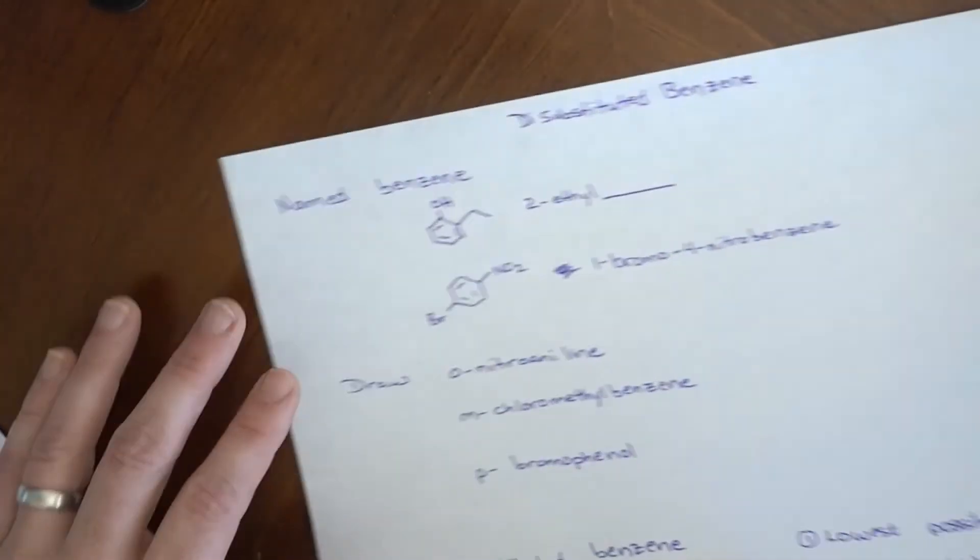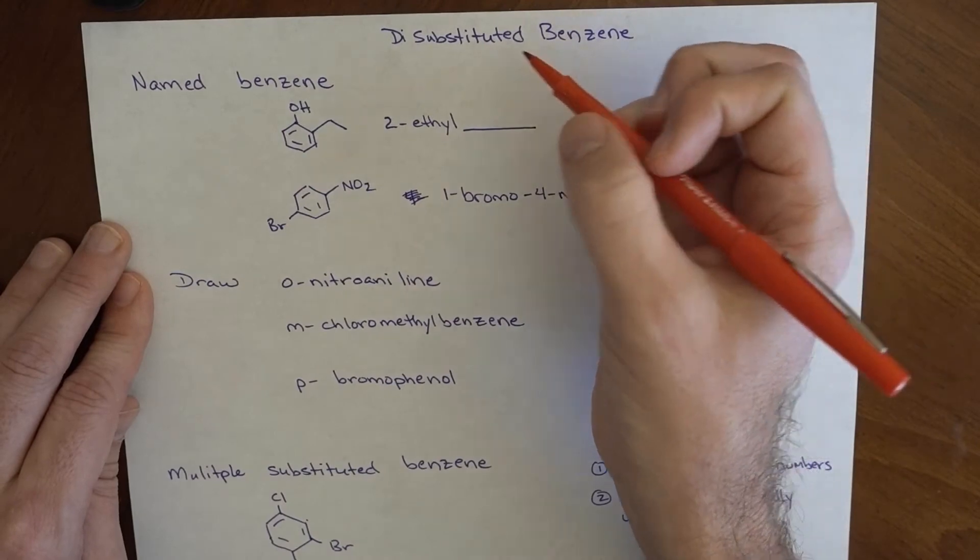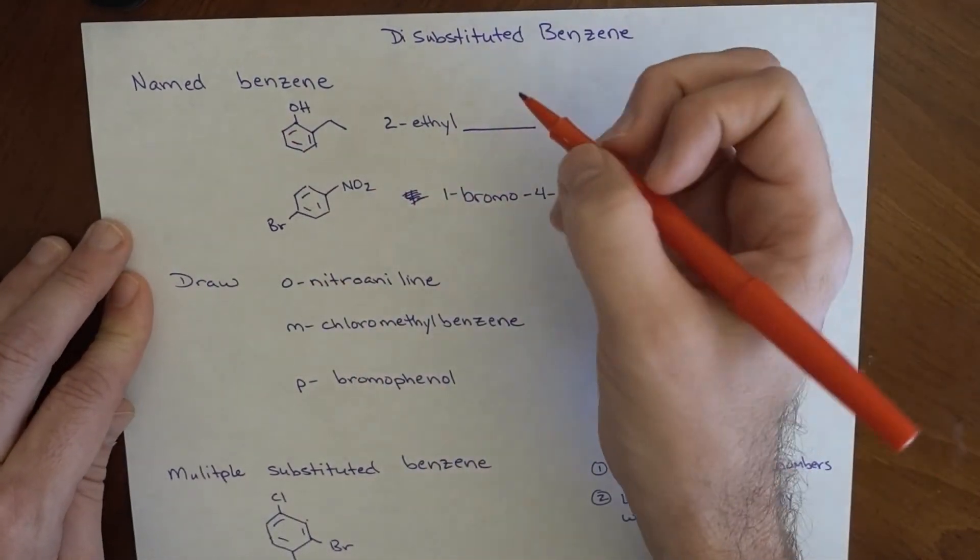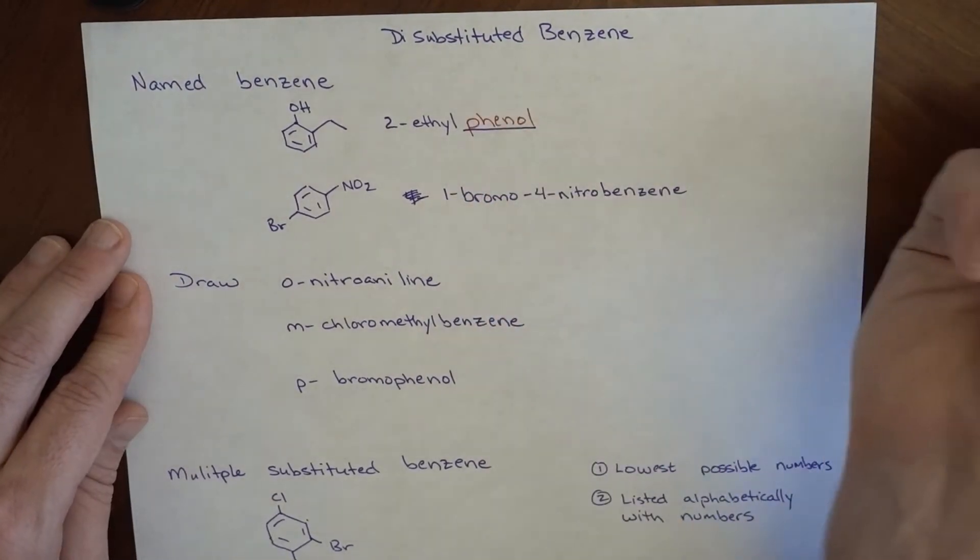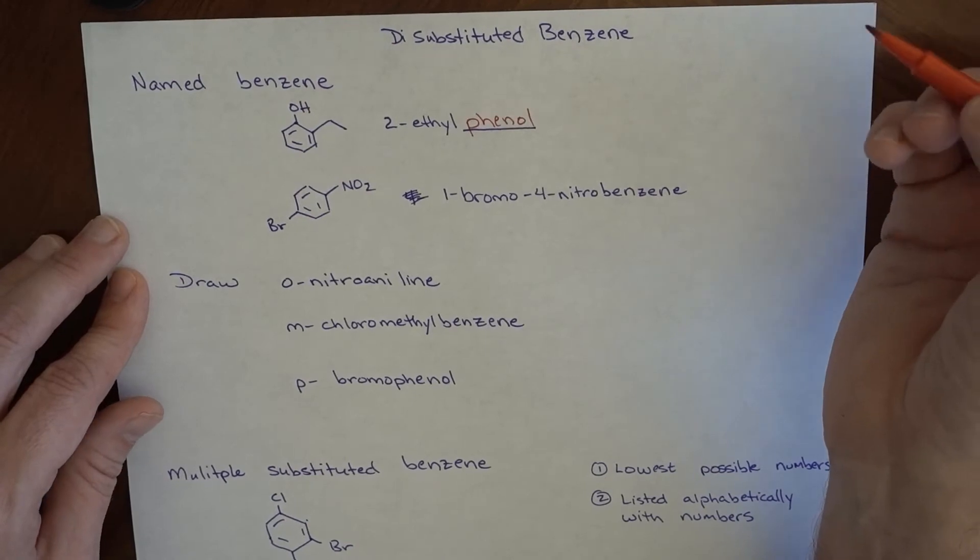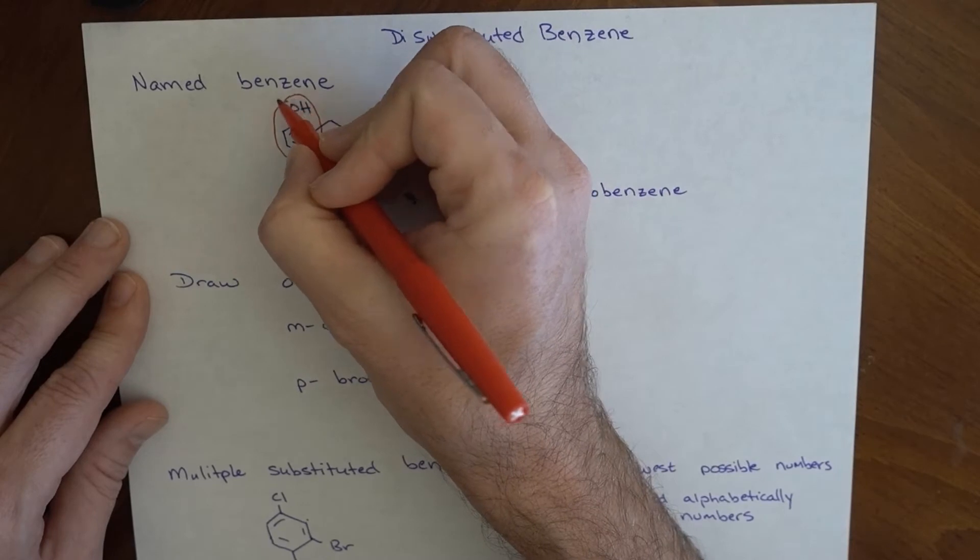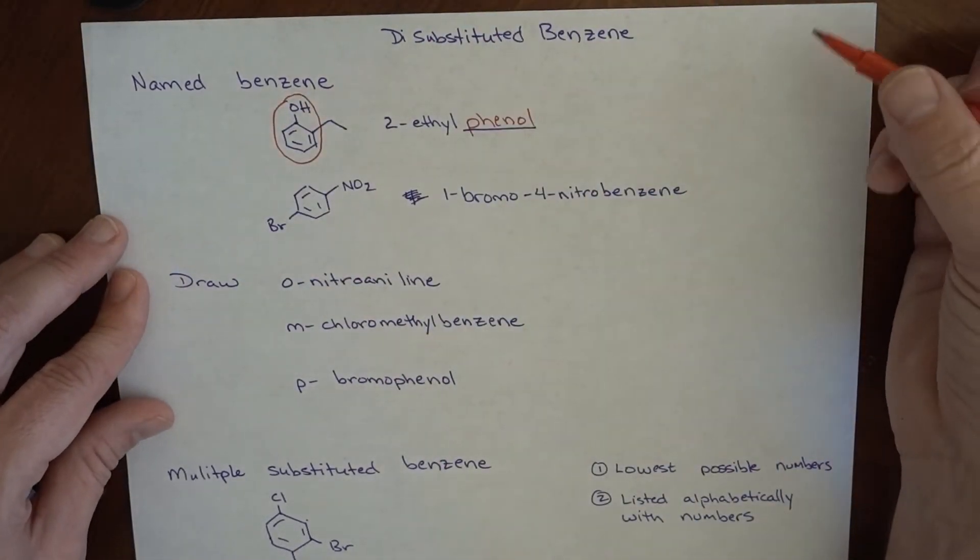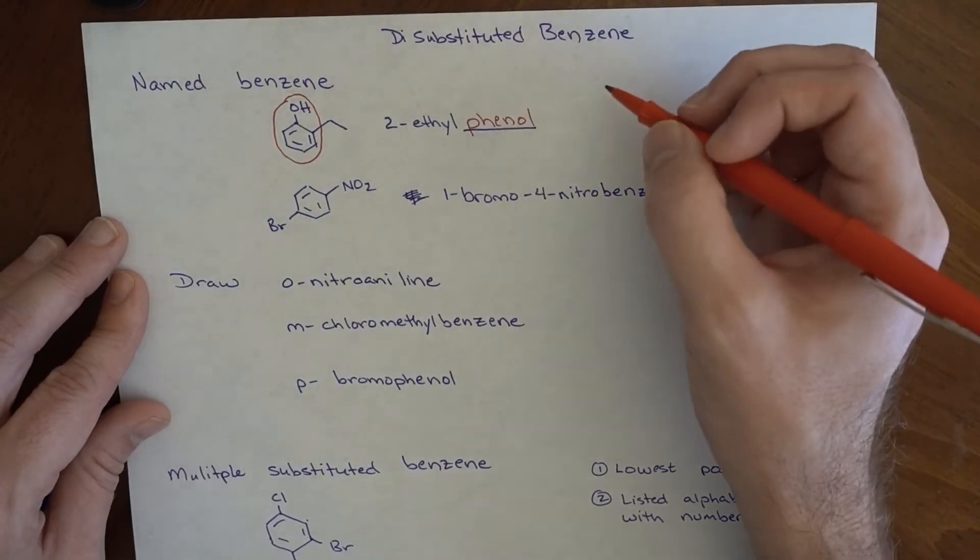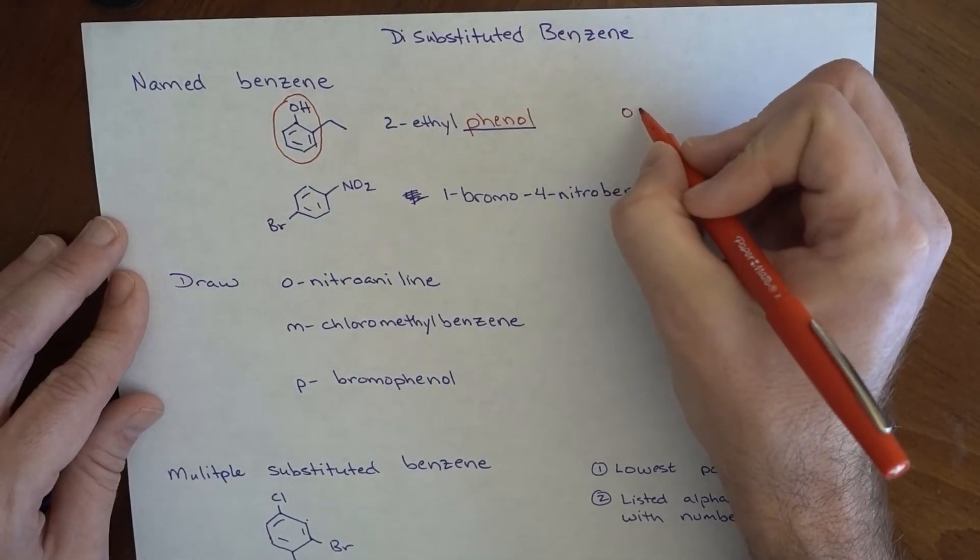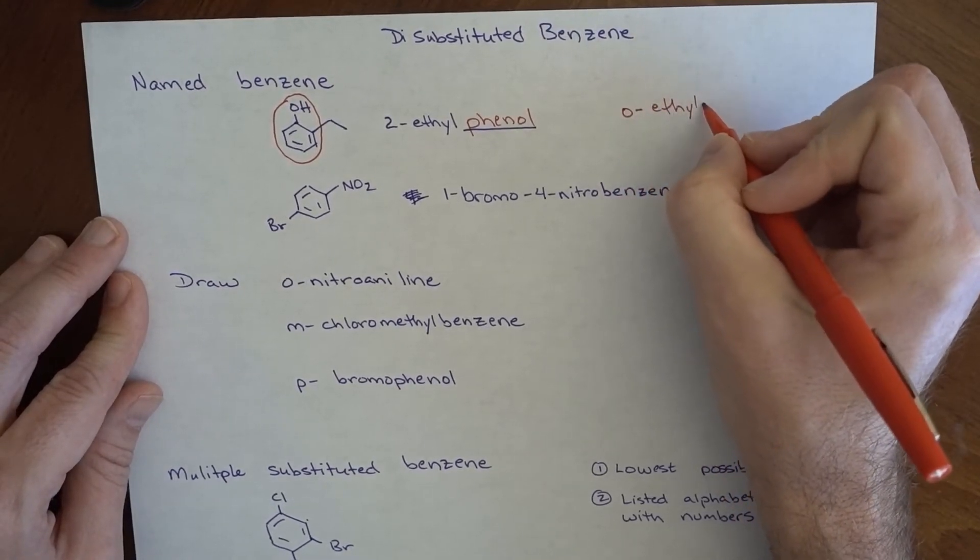If it's a named benzene, it kind of works in the same way. Here I've got an ethyl position that is right here. So it's 2-ethylphenol. And 2-ethylphenol, the other way that we can end up saying this, because this is the phenol group, this is one of those groups that we sort of want to commit to memory. Instead of saying 1-hydroxy-2-ethyl, we could say this would be an ortho-ethylphenol.